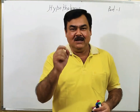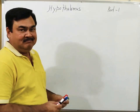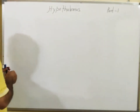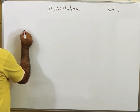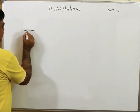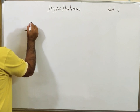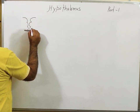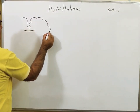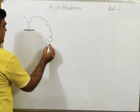We will discuss the anatomy of the hypothalamus, part 1. First, we will make a diagram. If you cut a coronal section of the brain, you will find the corpus callosum, and here is the insula.